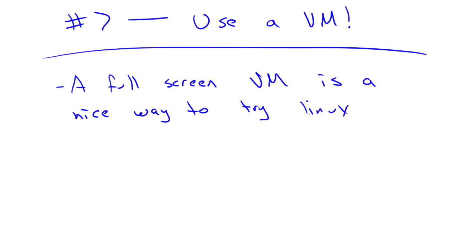Number 7: use a virtual machine. If you've ever used a virtual machine, you know it's easy to spin up and delete VMs. Every operating system on your desktop or laptop will have some sort of VM system you can download, whether it's VirtualBox or a commercial one. Put it full screen and it's going to be just like booting from a live CD, but you won't even have to reboot your computer. Virtual machines are a great way to try and experience Linux.